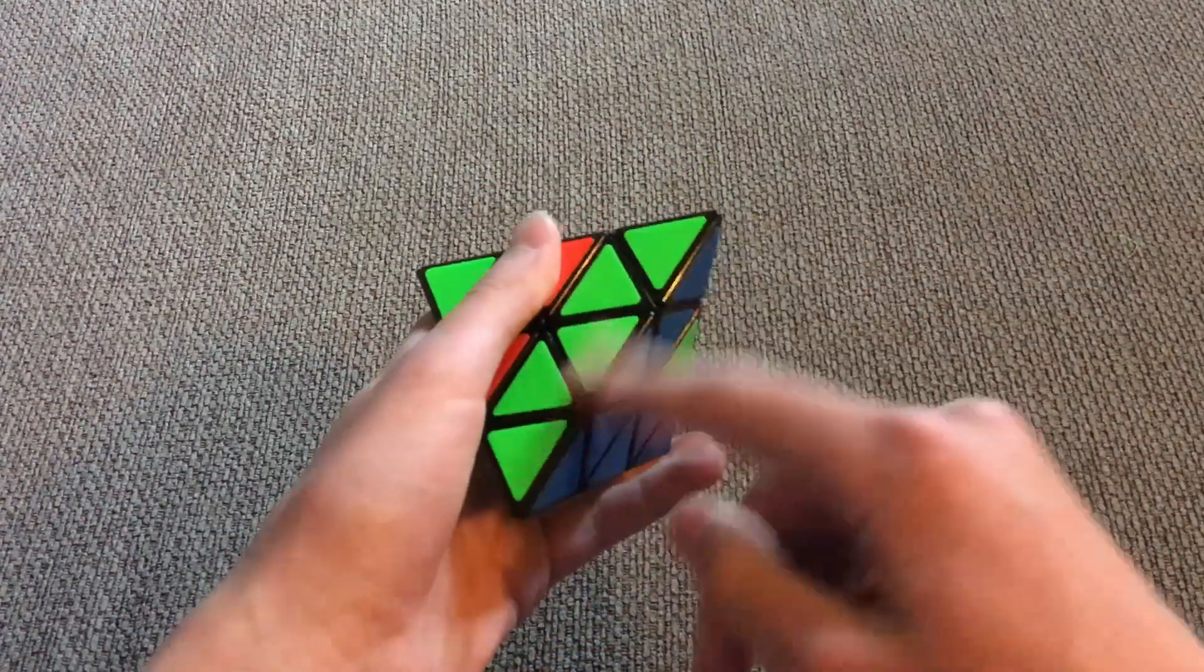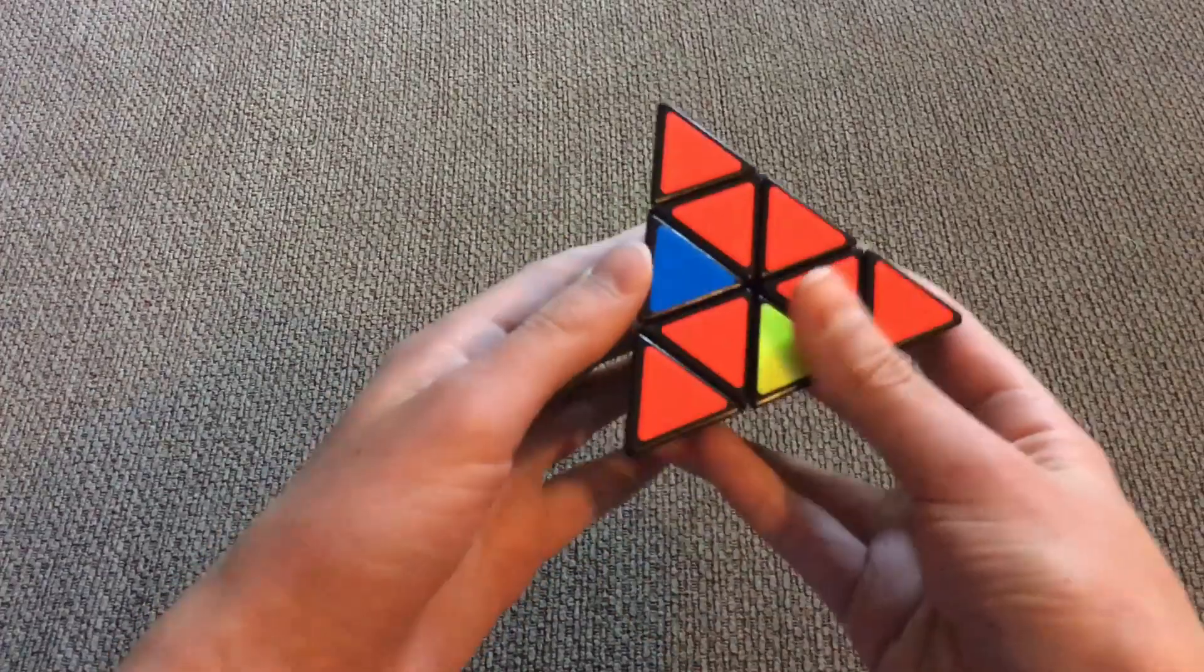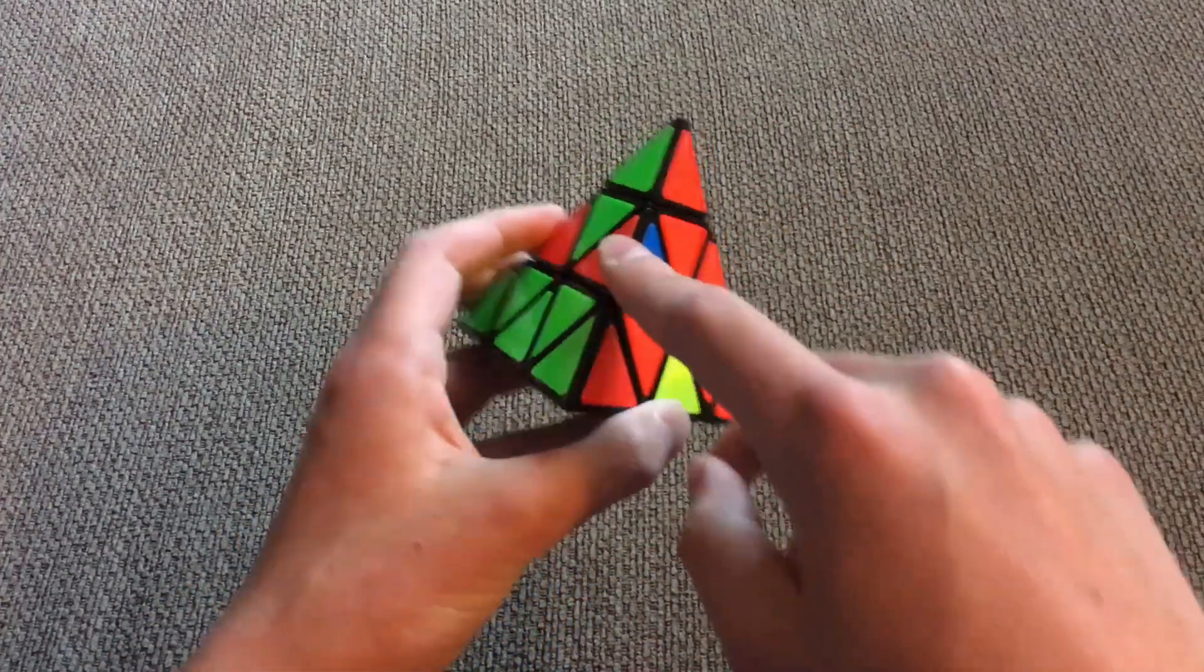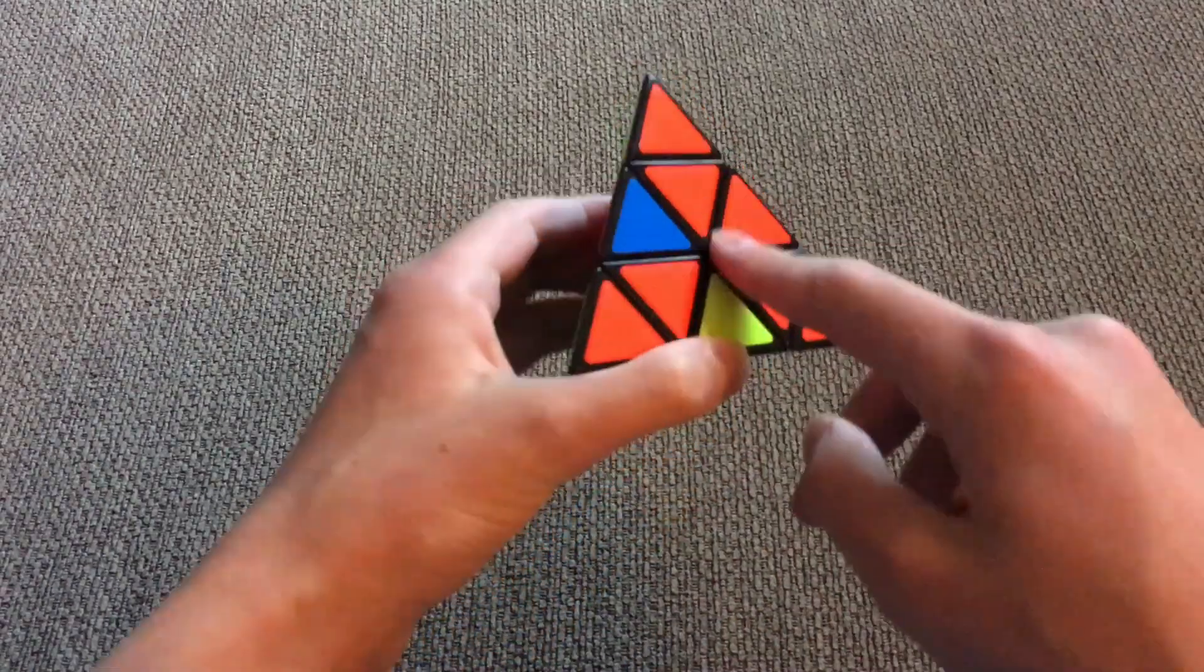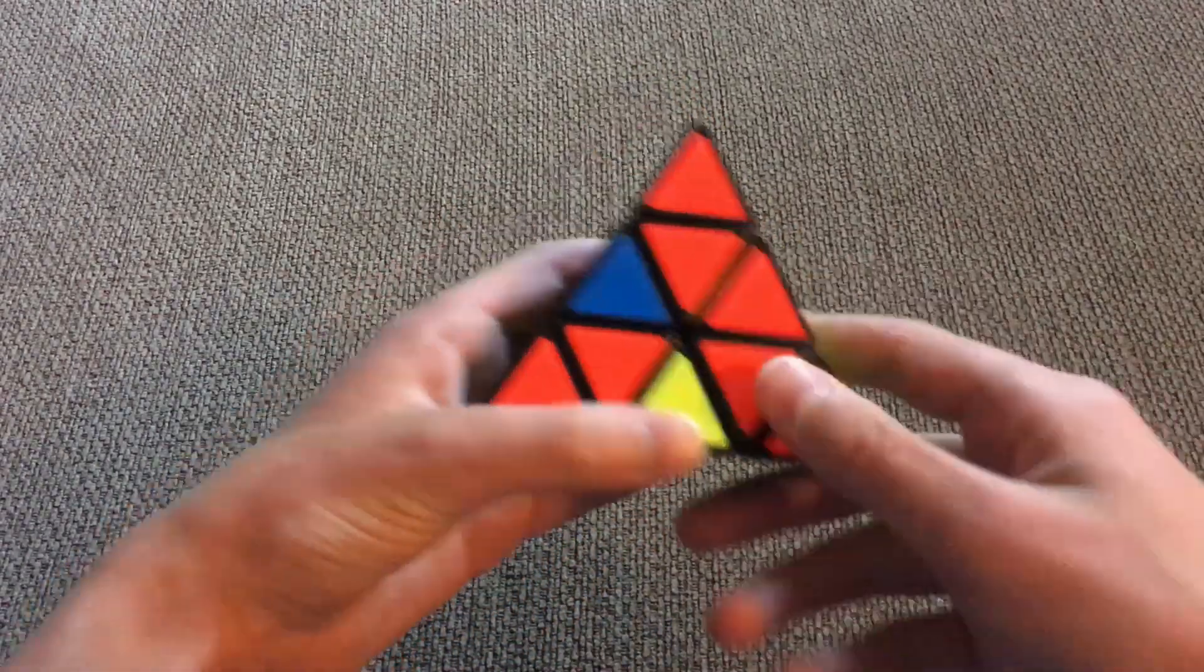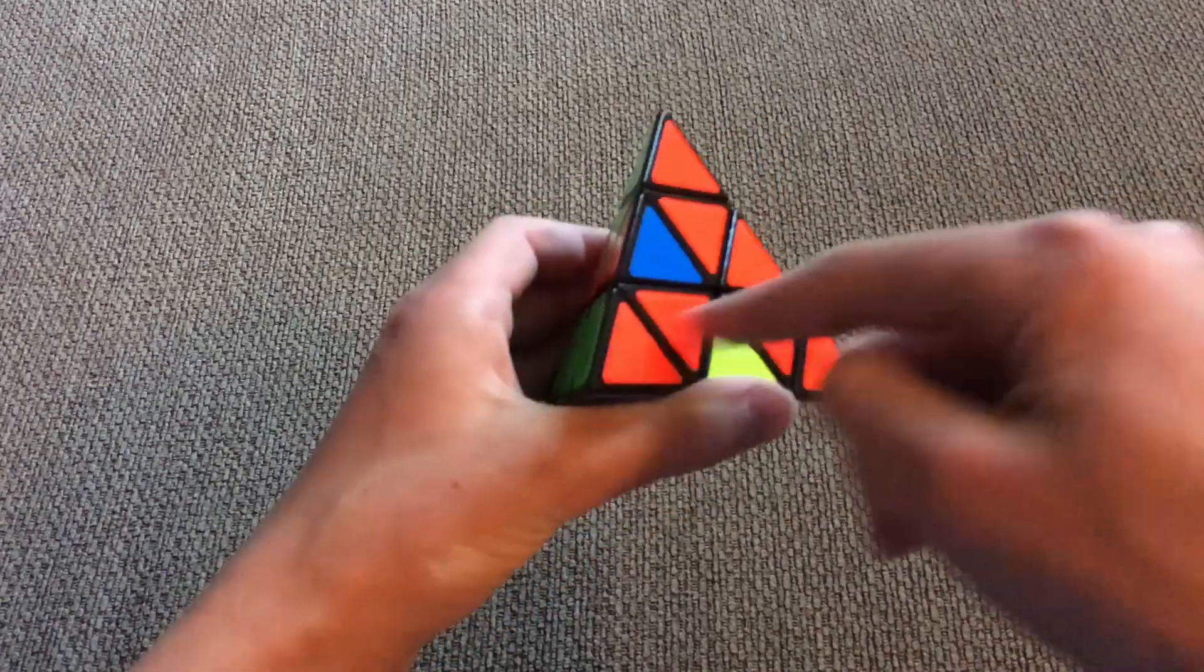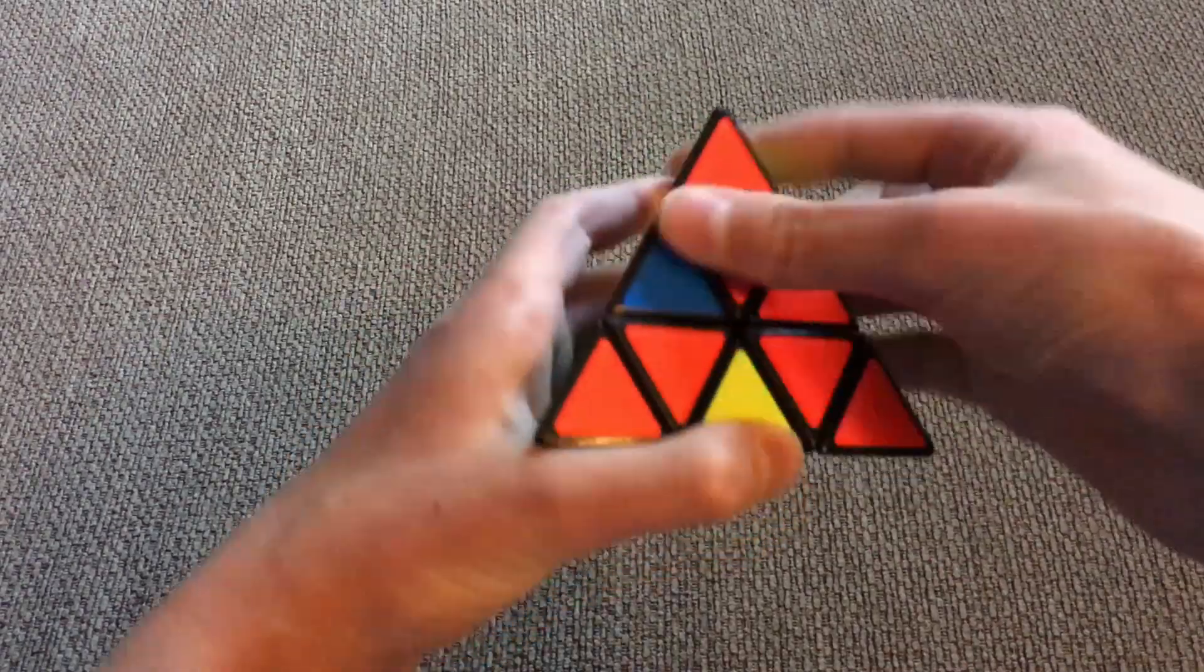And now you can see that the edge is correctly placed in, and now here's the other one, the red one, as the yellow one was already placed in before. And the red one is on the left side, so I'm going to align it with the red side, which it already is, by turning the top.